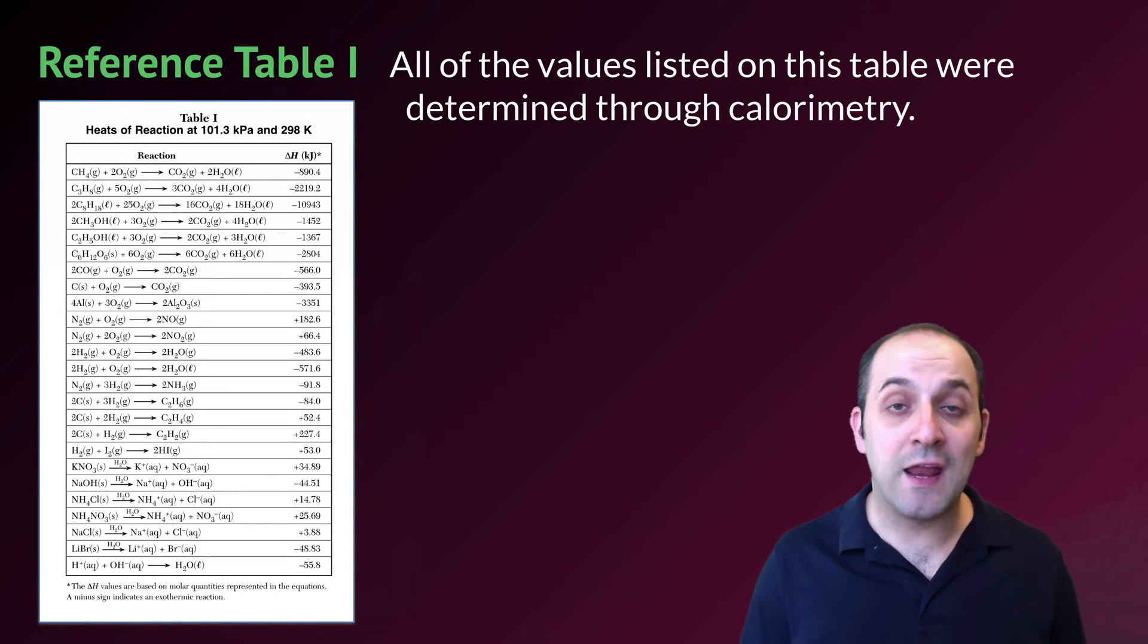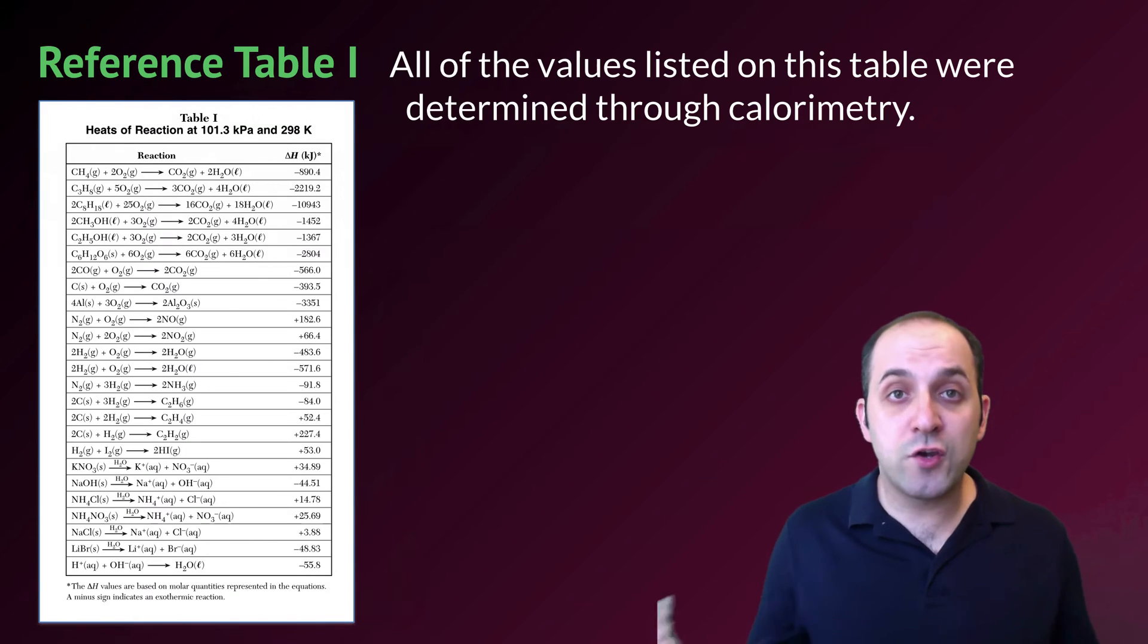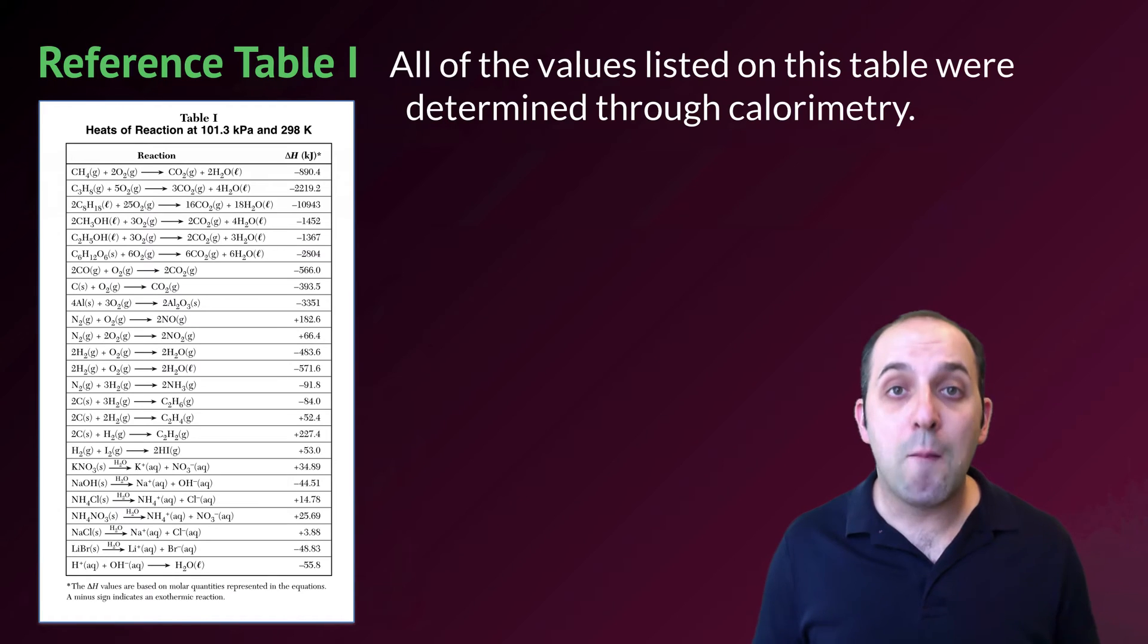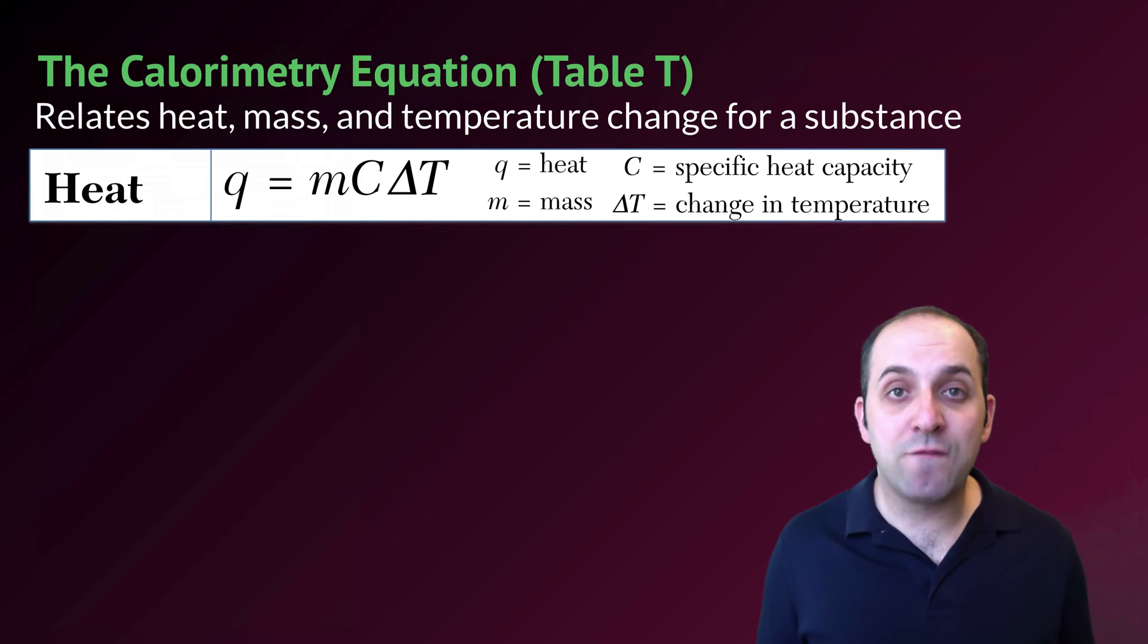We'd introduced reference table I in our last discussion. It's important to understand that all of the values listed on reference table I were determined through the process of calorimetry. In order to determine these accepted values, both in reference table I and in the food that we consume, many many experiments are done many many times, and the results from all of those are averaged together in order to be able to figure out the amount of energy stored in a substance.